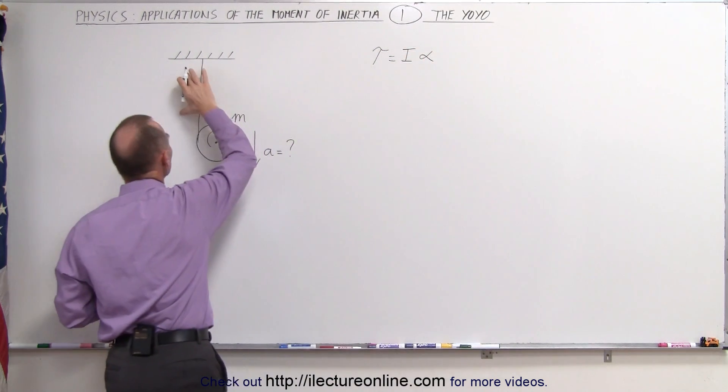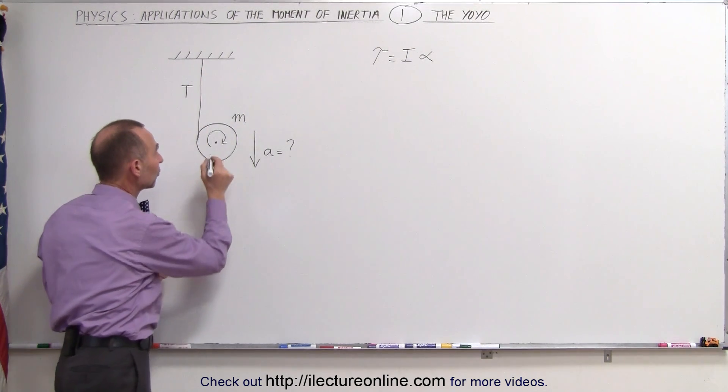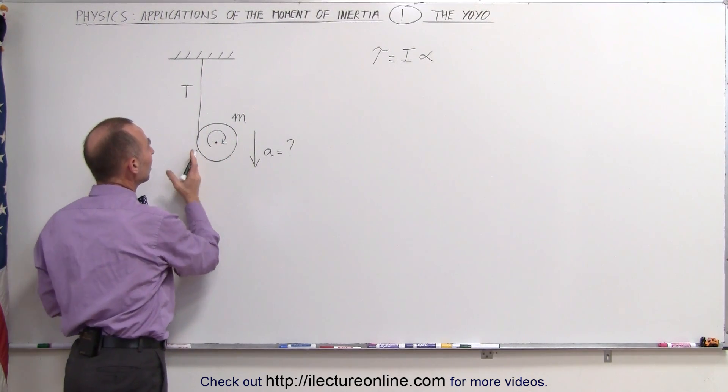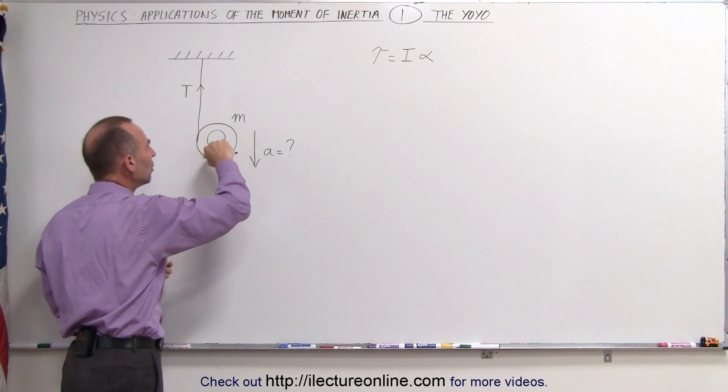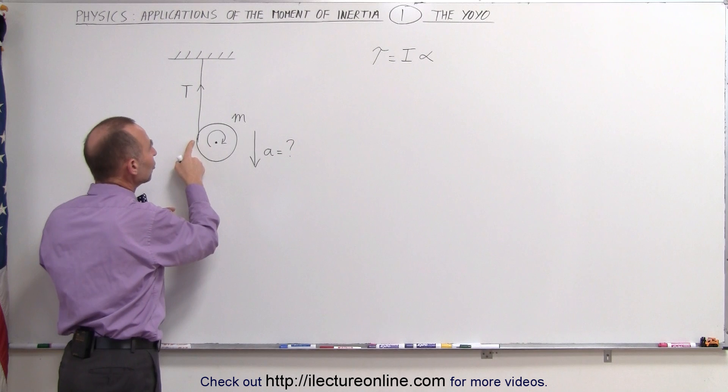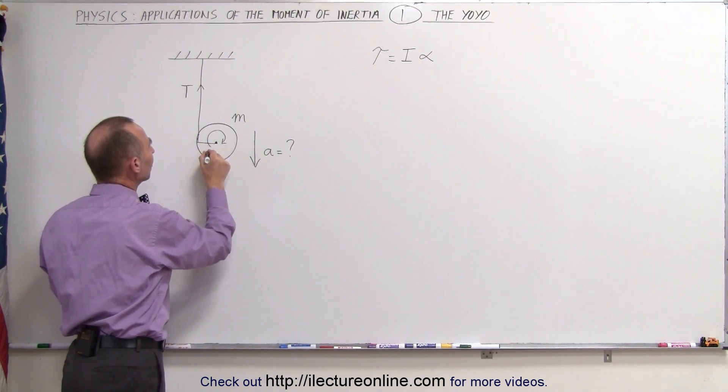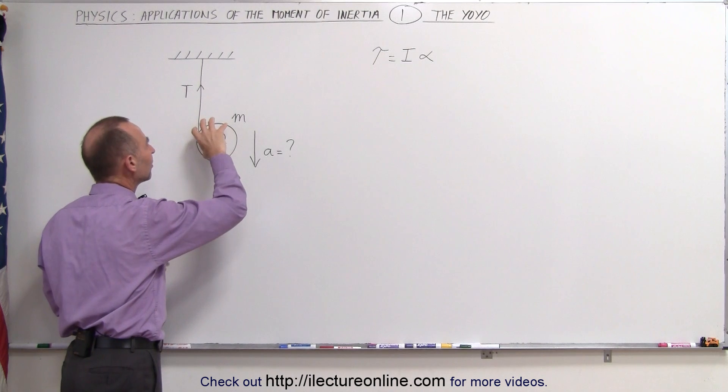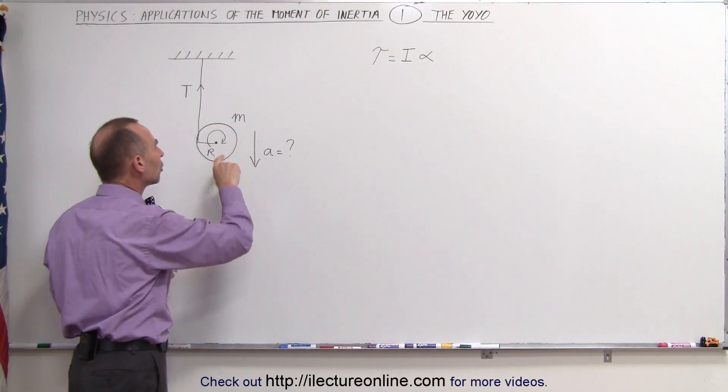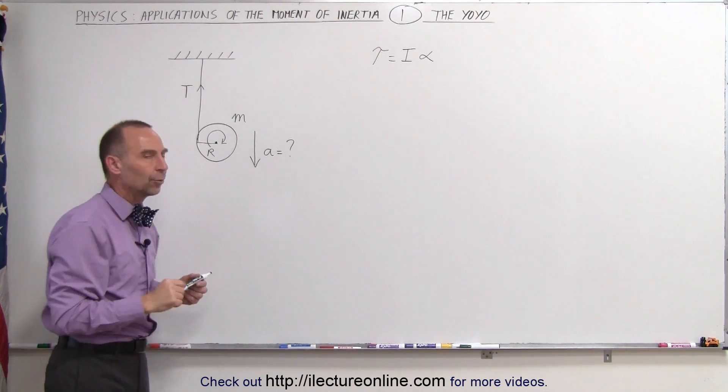It is the tension in the string here that provides the torque because here's the point of rotation. You can see that the tension which acts in this direction relative to the yo-yo pulls on the yo-yo on the edge of the yo-yo. We have the radius here of the yo-yo called R and so therefore the tension provides a torque on the yo-yo causing the yo-yo to have an angular acceleration.